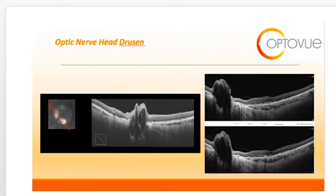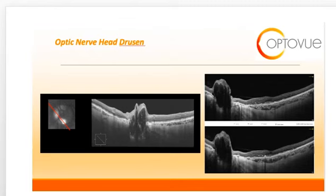On OCT, optic nerve head drusen will appear as an elevated optic nerve head with a lumpy, bumpy internal contour, which you can see here. It looks quite different in comparison to the slides on true papilledema that I showed you before. Optic disc drusen have also been referred to as congenitally elevated or anomalous discs.